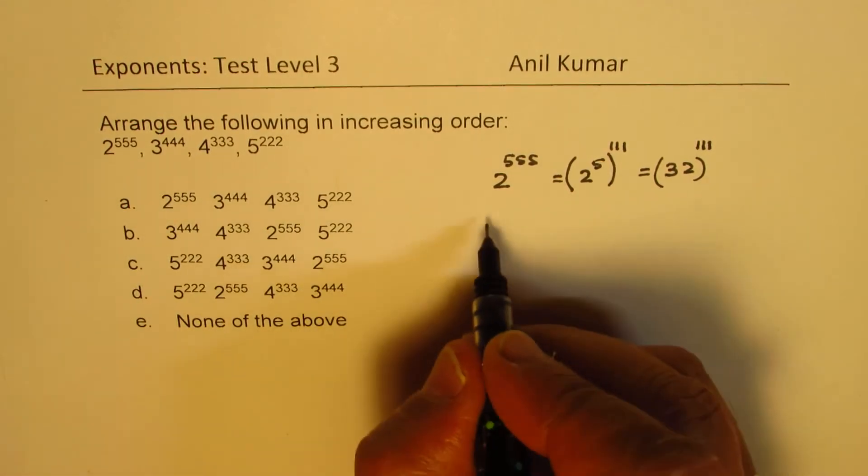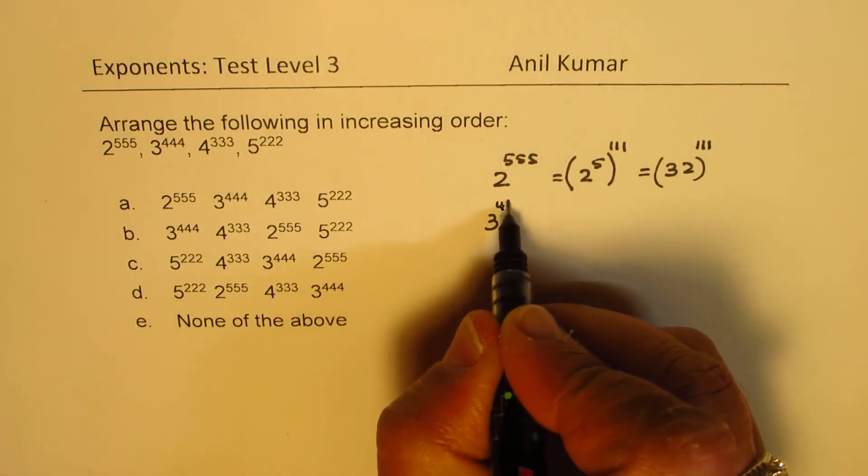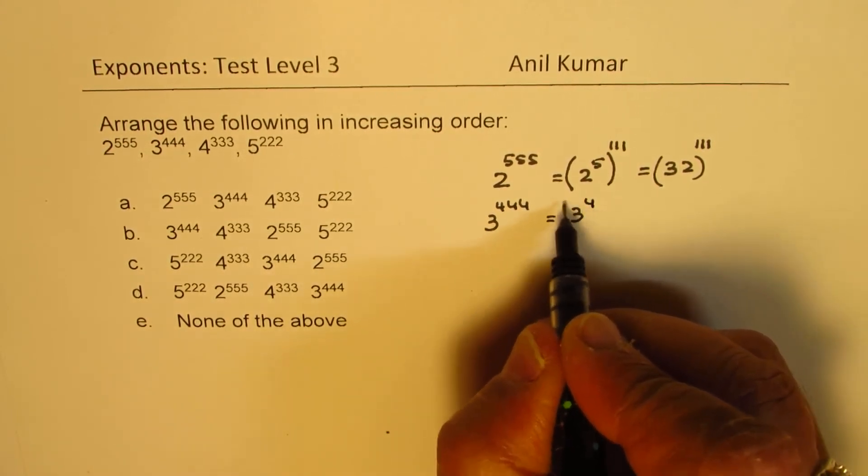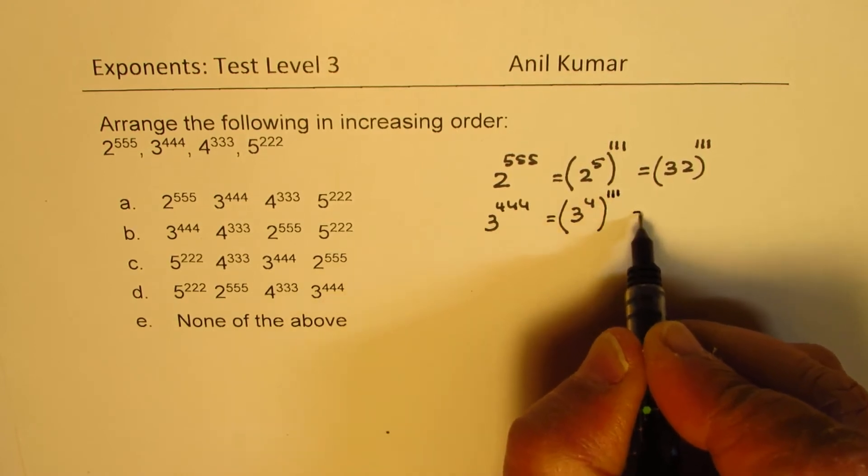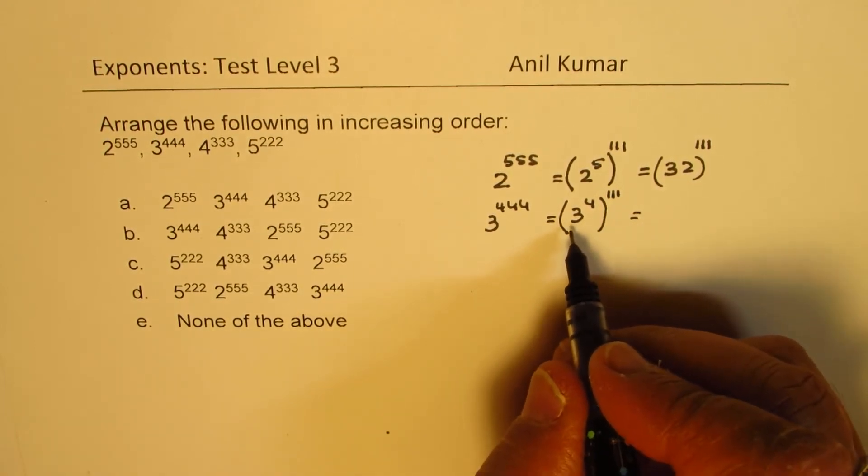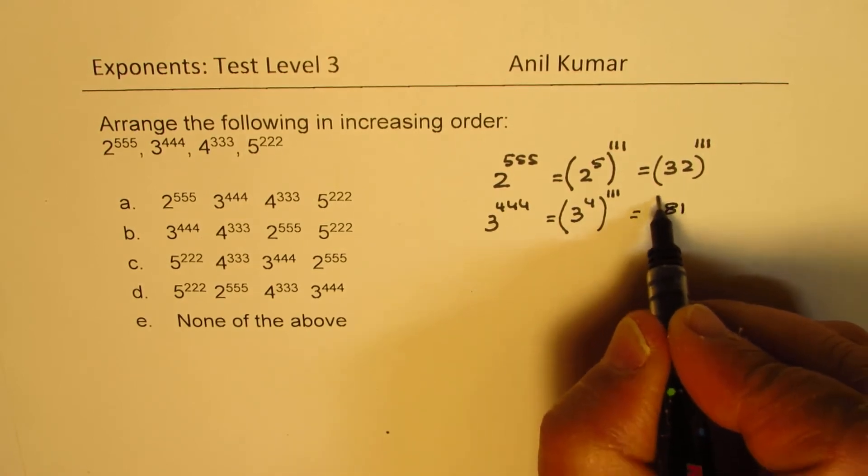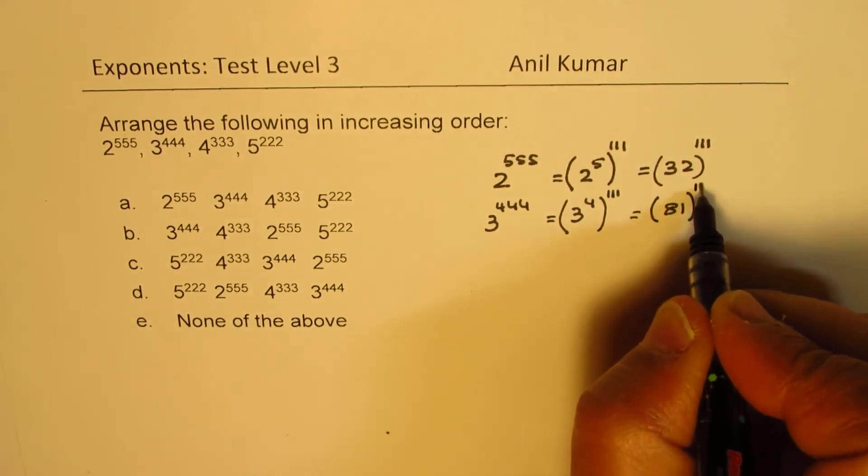Now, 3 to the power of 444 is as good as 3 to the power of 4 to the power of 111. Now, 3 times 3, 9 times 9, 81. So, we get 81 to the power of triple 1.